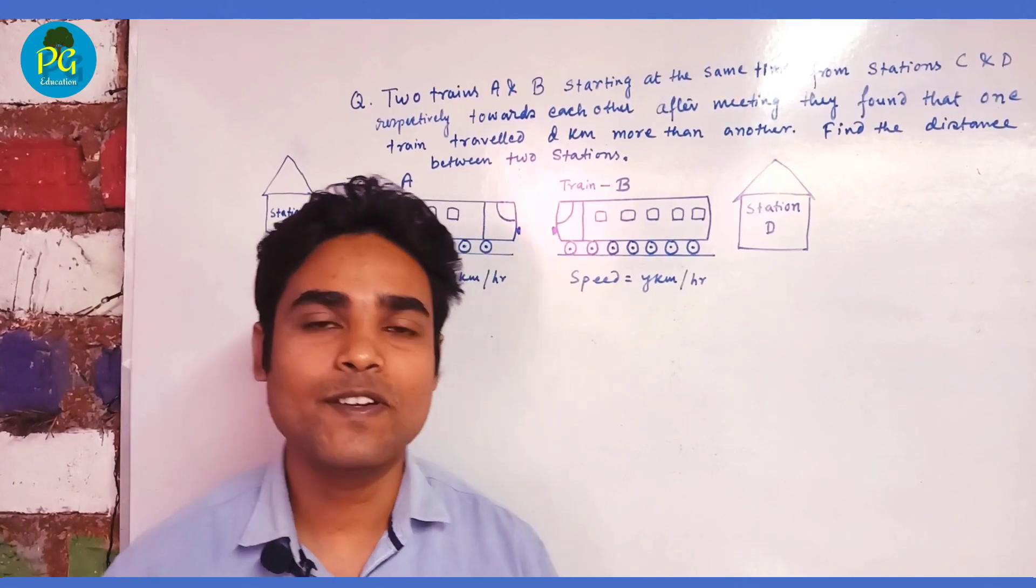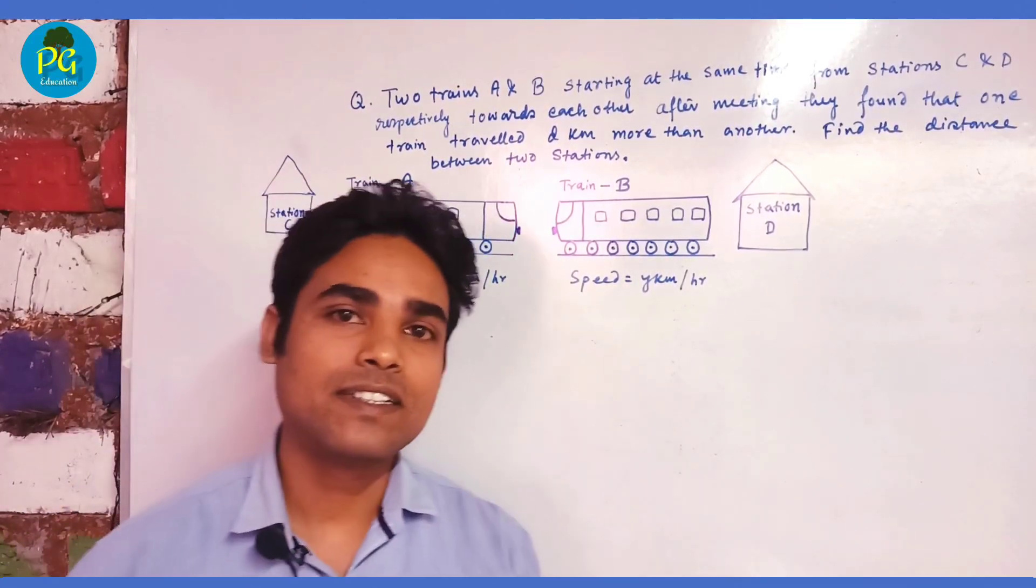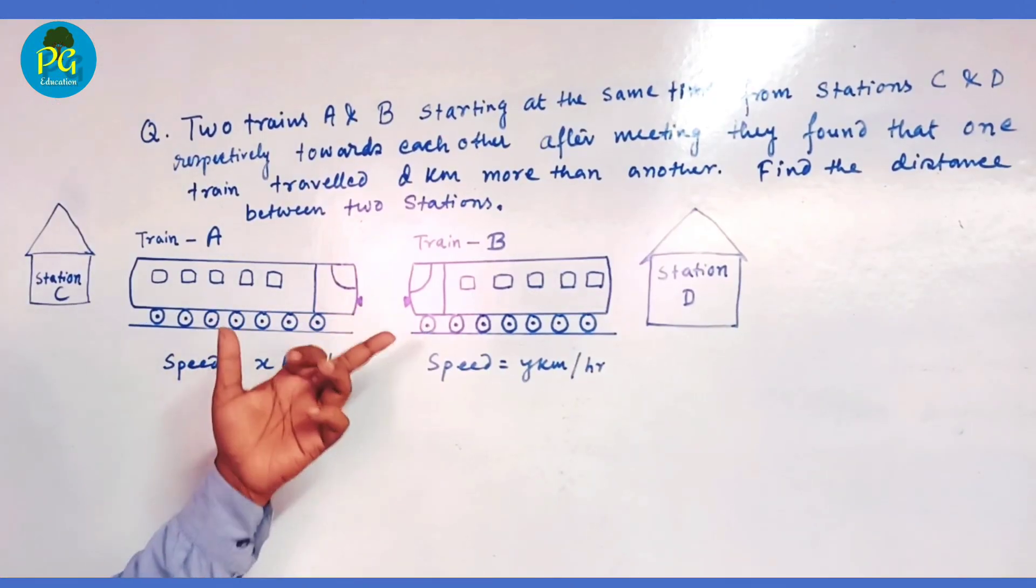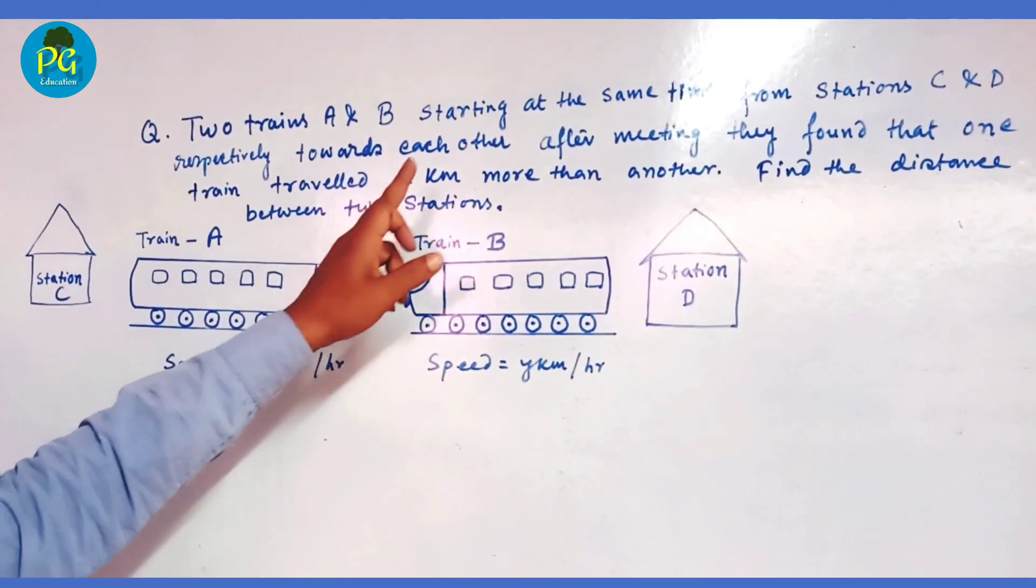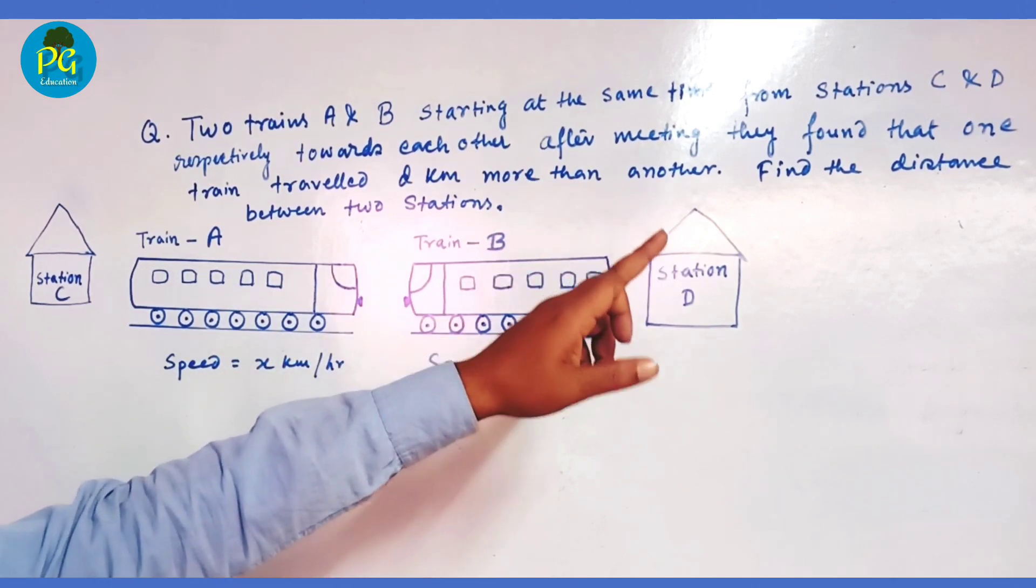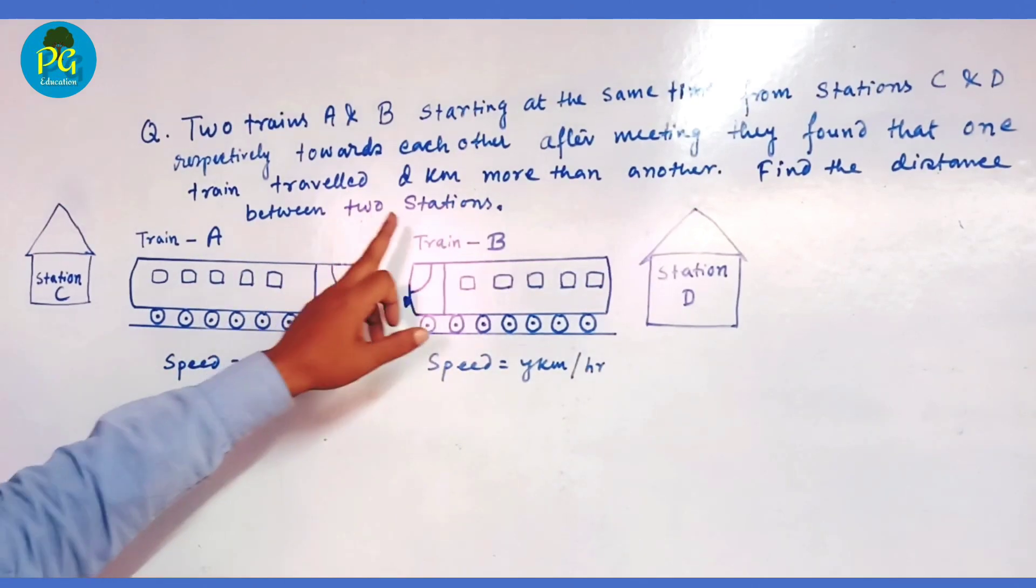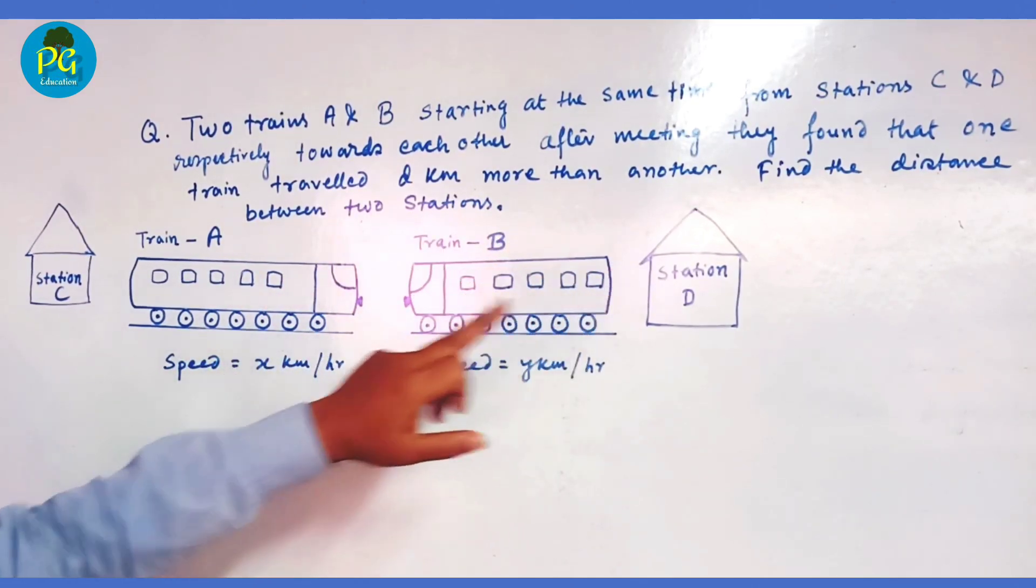Hi friends, welcome to our next video. In this video, we will discuss problems on trains. Here's a question: Two trains A and B start at the same time from stations C and D respectively, towards each other. After meeting, they found that one train traveled D kilometers more than another. Find the distance between the two stations.